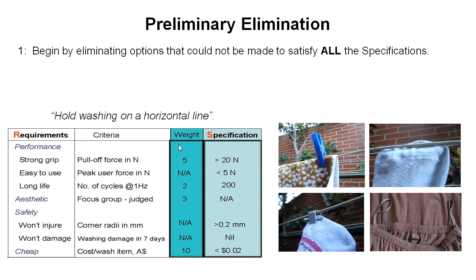Aesthetics — we're not going to put a specification on that. Safety — we want corner radii to be greater than 0.2 millimeters so that we don't cut our fingers when we're using it. Won't damage our clothing over 7 days — we want there to be no damage. And cheap — we've specified a cost of less than 2 cents per item.